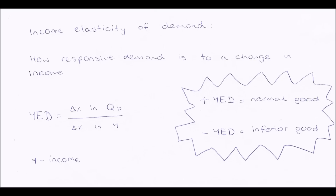But if we were to work out the income elasticity of demand of a good, what does the number we get actually mean? With price elasticity of demand and price elasticity of supply, we looked at the number itself — not the symbol in front of it, not the plus or minus — but with income elasticity of demand it is the opposite. We look at the symbol instead of the number.